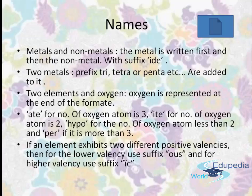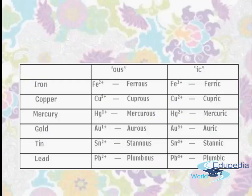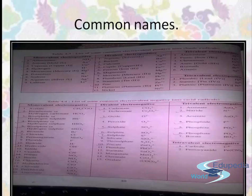If an element exhibits two different positive valencies, the lower valency uses the suffix OUS and the higher valency uses the suffix IC. For example: iron — ferrous and ferric; copper — cuprous and cupric; mercury — mercurous and mercuric; gold — aurous and auric; tin — stannous and stannic; lead — plumbous and plumbic. We also have monovalent, divalent, and trivalent electropositive and electronegative ions, also called radicals, which can be seen in the reference table.